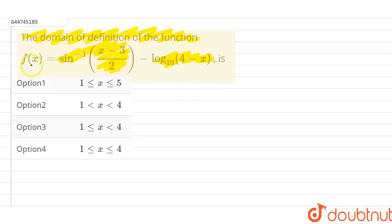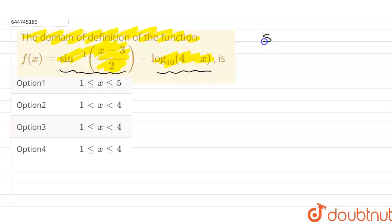The domain of f(x) is the intersection of the domains of both functions. We know that for sin⁻¹(x), the value of x must lie between minus 1 and 1.